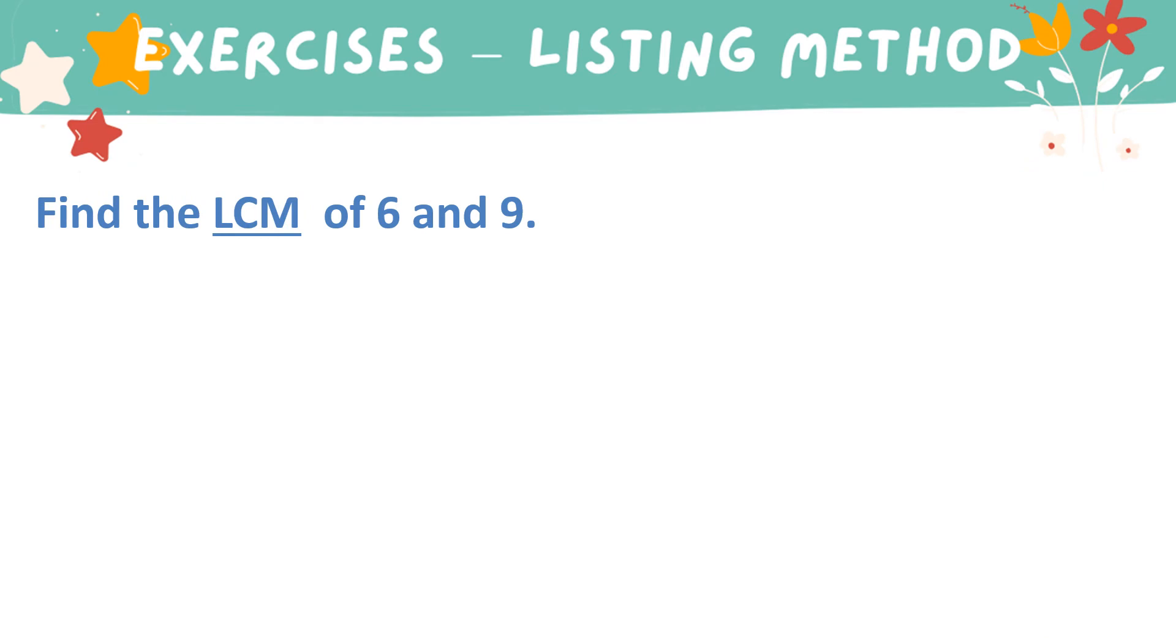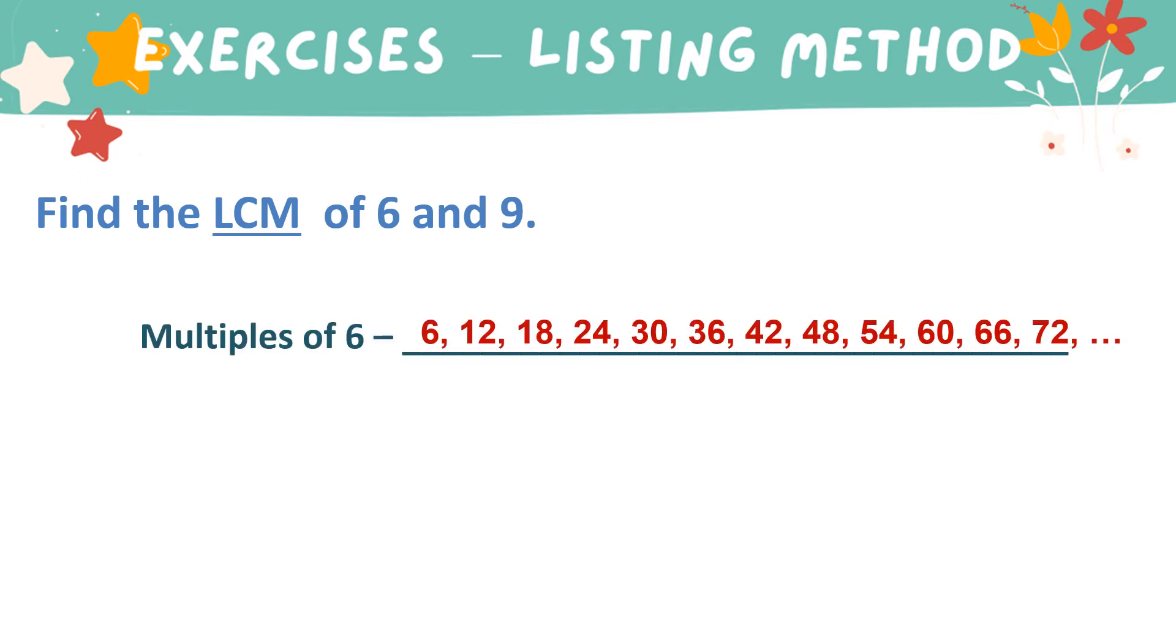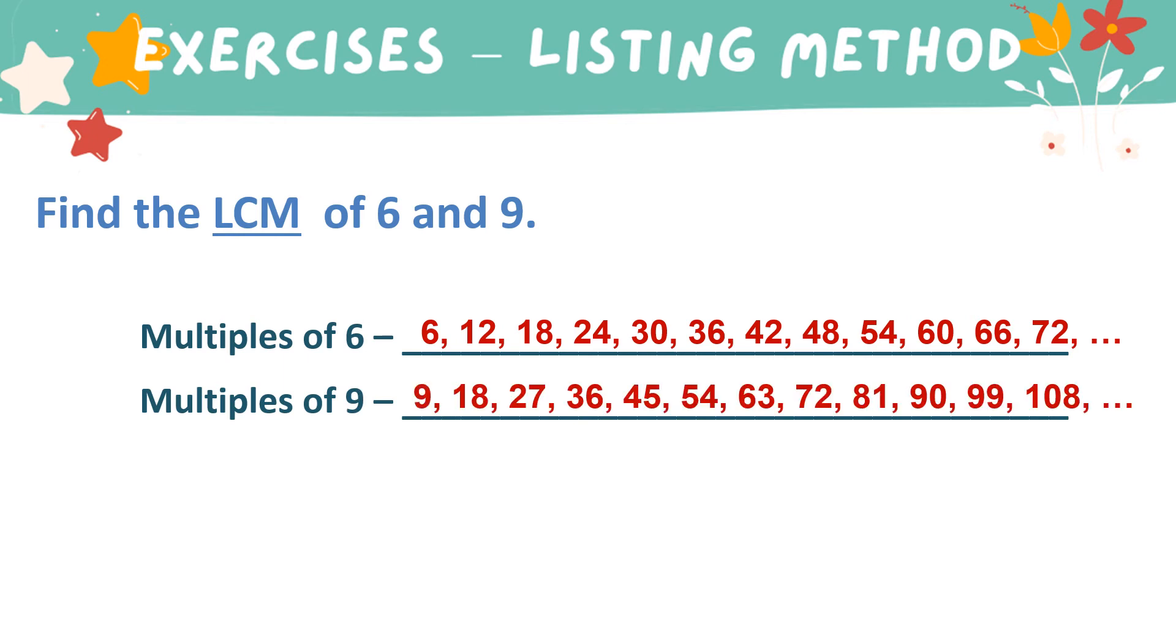Let's have more exercises. Let's find the LCM of 6 and 9 using the listing method. These are the multiples of 6. And these are the multiples of 9. Common multiples of 6 and 9, we have 18. What else? Yes, 36.